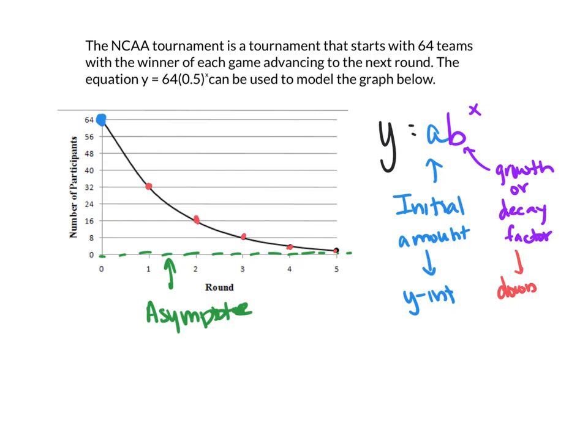So we look at this, if we want to identify from the equation, which was y equals your a, 64, that's the initial amount, times your b, which is 0.5, raised to the x, where x is going to be any one of these rounds in this case.